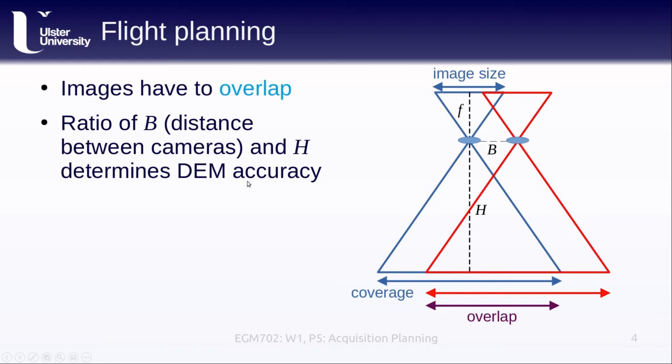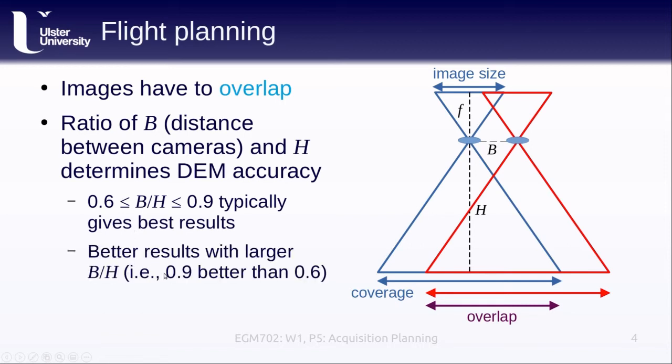Typically, we want a B/H ratio between 0.6 and 0.9. This is what usually gives us our best results, with higher values giving better results. So that means closer to 0.9 rather than 0.6.